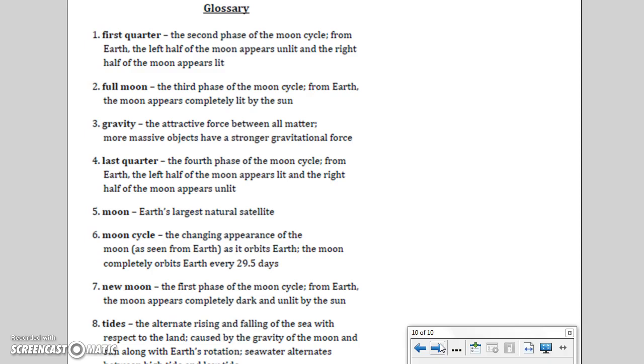Gravity: the attractive force between all matter. More massive objects have stronger gravitational force. Last quarter: the fourth phase of the moon cycle. From Earth, the left half of the moon appears lit and the right half of the moon appears unlit. Moon: Earth's largest natural satellite. Moon cycle: the changing appearance of the moon as seen from Earth as it orbits Earth. The moon completely orbits Earth every 29.5 days.